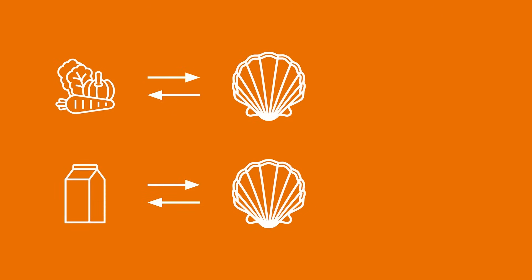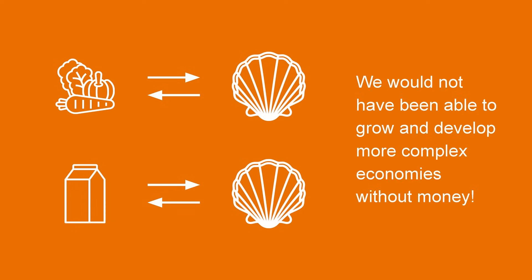The presence of money magically solves this problem. It makes conducting transactions much more efficient. I can sell my vegetables for some shells, and the dairy farmer can sell their milk for some shells as well. We can then use the shell money we have to get whatever we want in the market. Clearly, a lot more economic transactions can happen with the presence of money, since we don't have to search for a matching trading partner anymore. It would not have been possible to grow our economies or develop the kind of complex and physically dispersed economies we live in without money.